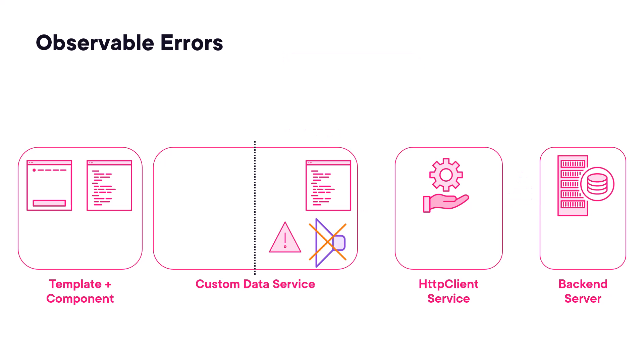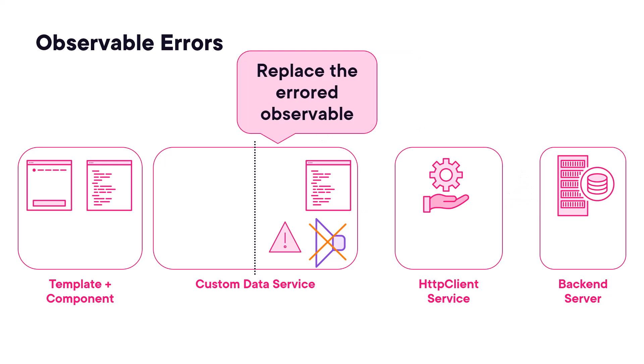When we process an error, we replace the Error Observable with another observable, because the Error Observable stops and won't emit any more items. The Replacement Observable could emit a default value, so any code in a template that is bound to the observable will still work. We could also provide error information with that default data.